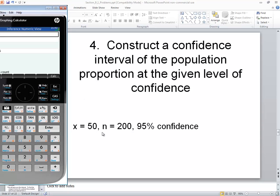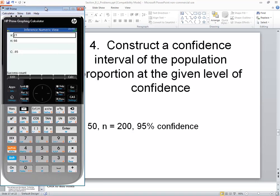Now for this problem, you see it tells us construct confidence interval x is equal to 50, n is equal to 200. So for x, we'll put in 50. And then I'll press enter. n is 200, so I'll put in 200 and press enter.